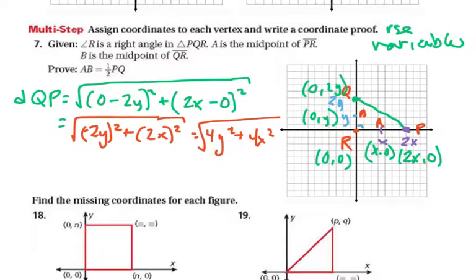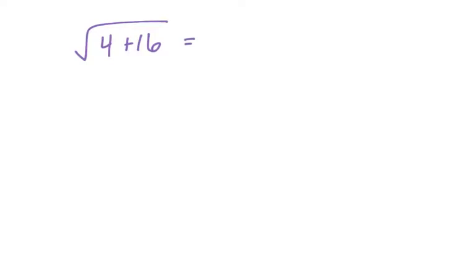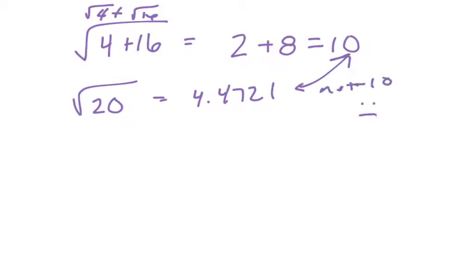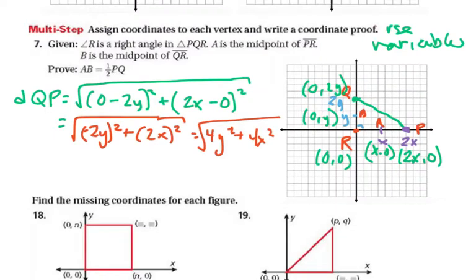Some of you might say the 4s become 2s and the squares become square roots, but be careful: for example, √(4 + 16) is not equal to 2 + 8. The square root of 20 is actually approximately 4.4721, which is certainly not 10. You can't apply the square root to each term separately under addition — √(4+16) ≠ √4 + √16. So we can't use that shortcut here.